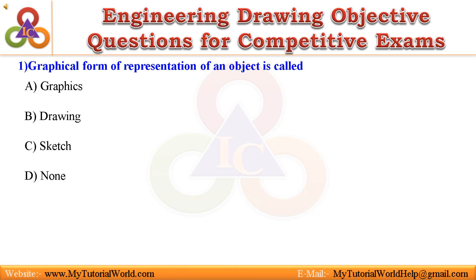Question 1. Graphical form of representation of an object is called: A. Graphics, B. Drawing, C. Sketch, D. None. Answer is Drawing.